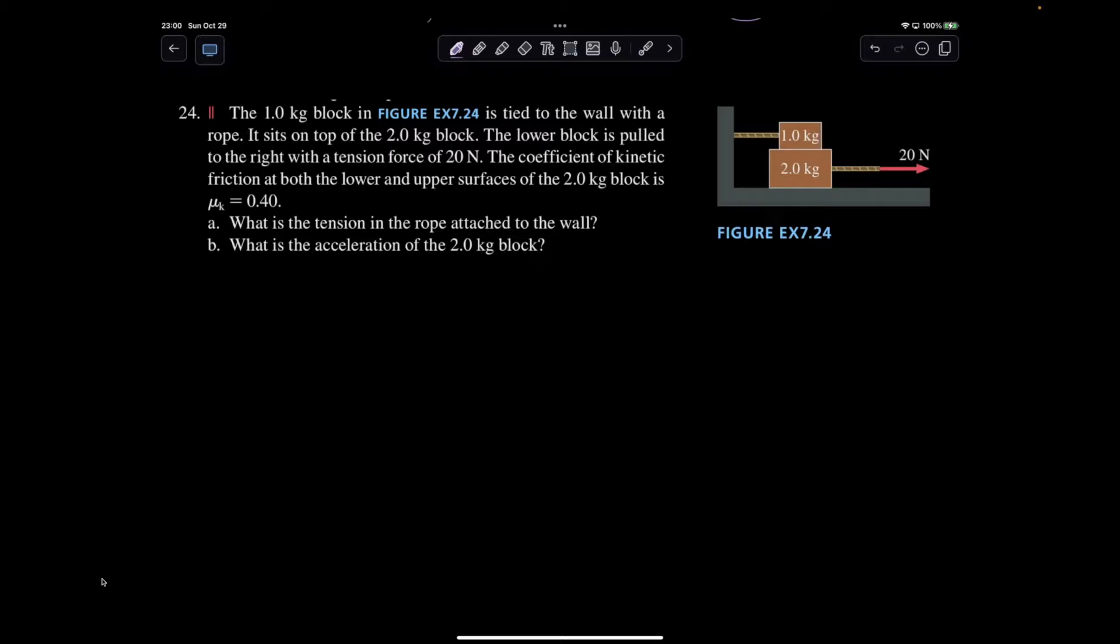The two kilogram object is being pulled and is going to slide under the one kilogram object. The one kilogram object is fastened to the wall, so it's going to stay at rest relative to the ground, not relative to the two kilogram object.